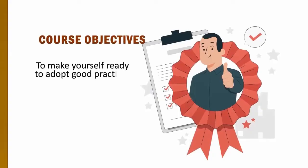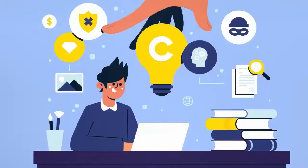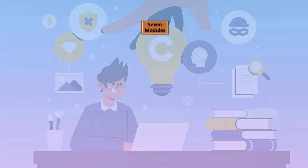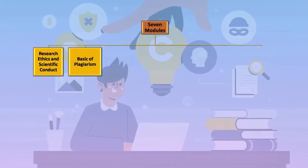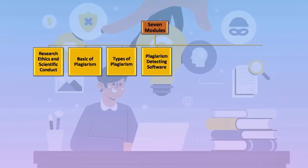This course will also prepare you to adopt good practices as a research mentor and guide. We have structured the course into weekly modules. It is 8 weeks in duration with 7 modules. The first module covers research ethics and scientific conduct, the second covers basics of plagiarism, the third also addresses plagiarism, and the fourth module discusses plagiarism detection software.